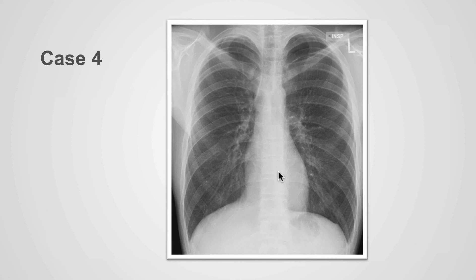Can you identify the pneumothorax on this examination? Please pause the video and try. In this case, we can identify the clear line of the visceral pleura in the left apex and the paucity of markings and increased blackness within the left apex, consistent with a left apical pneumothorax.